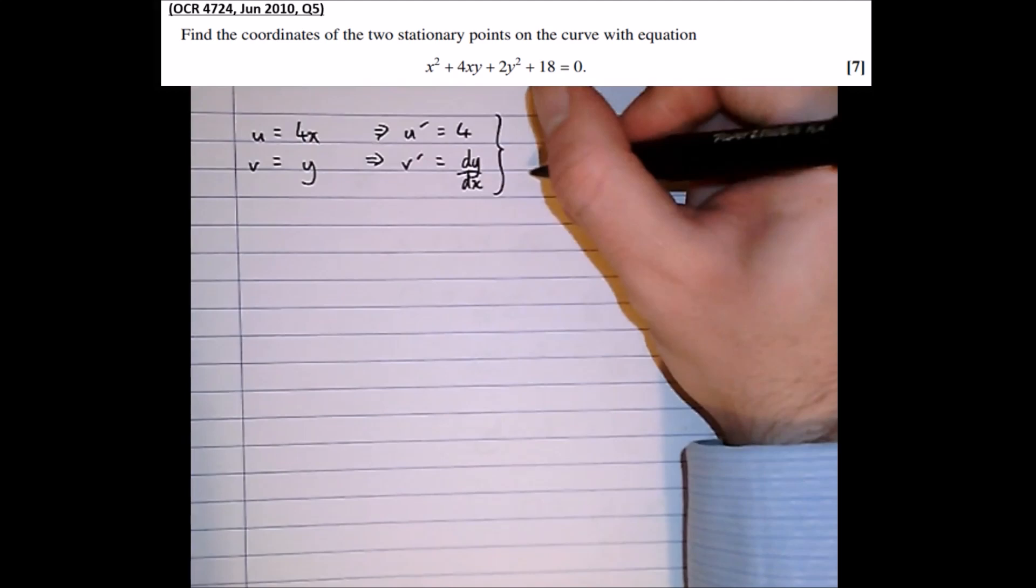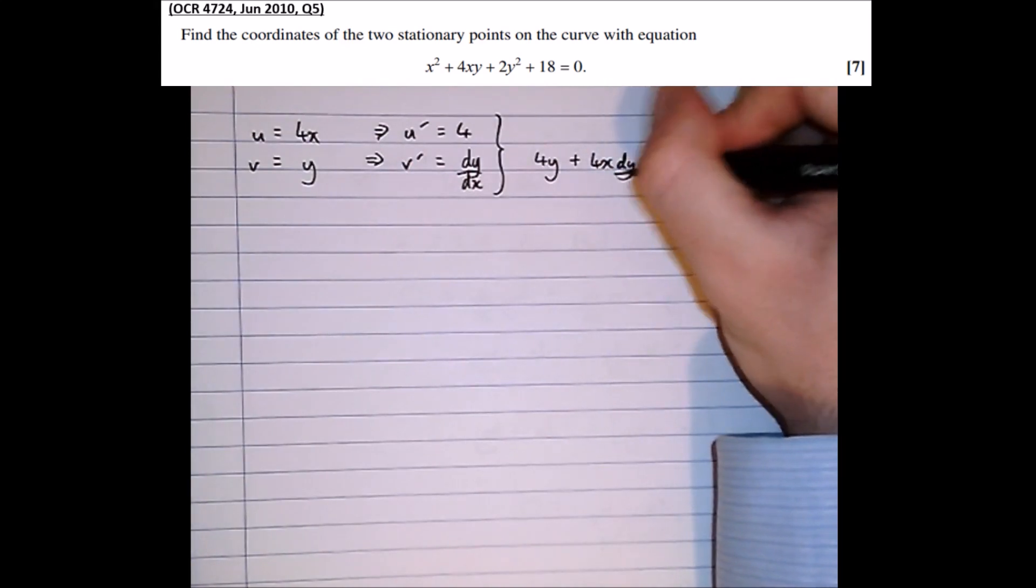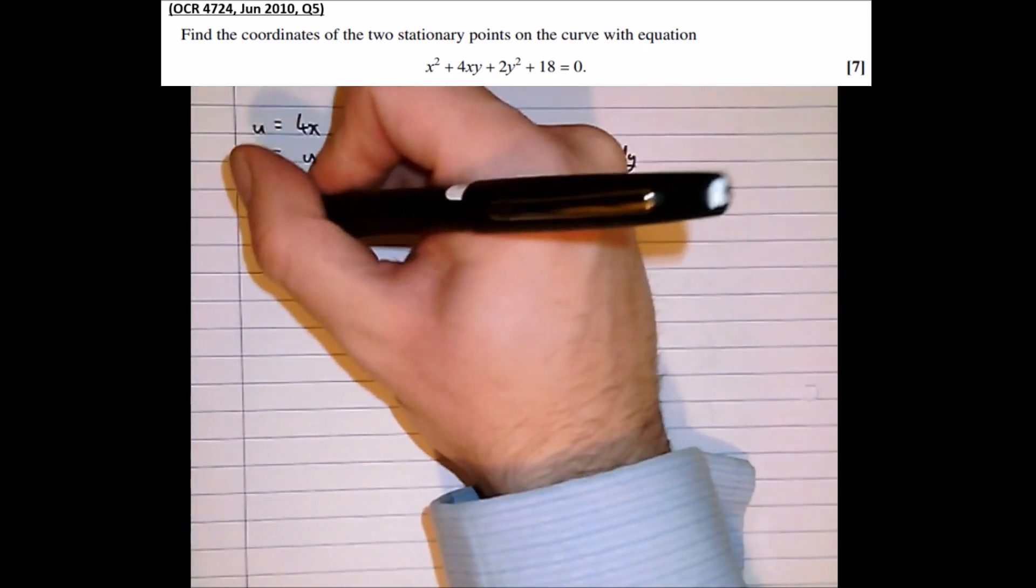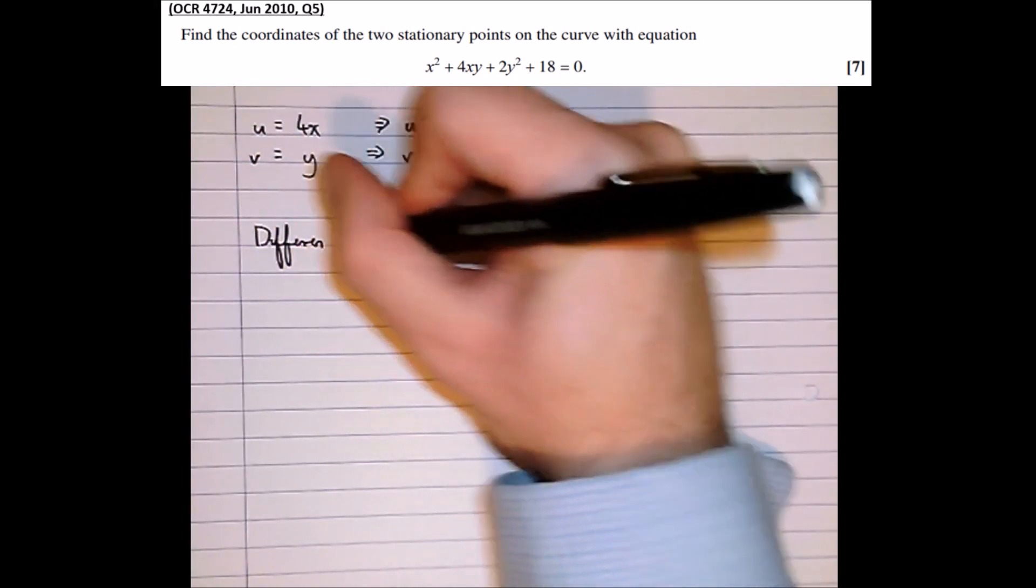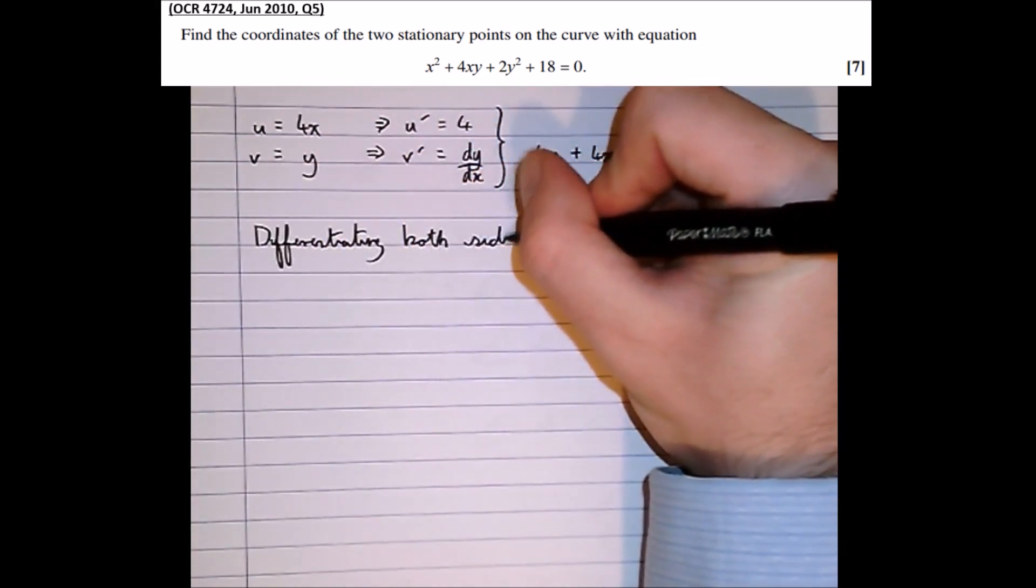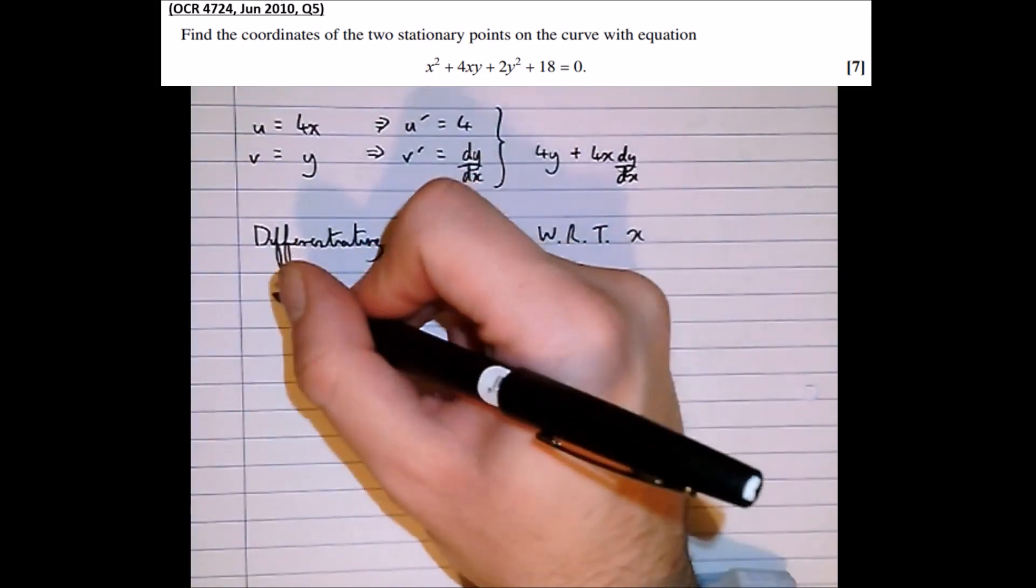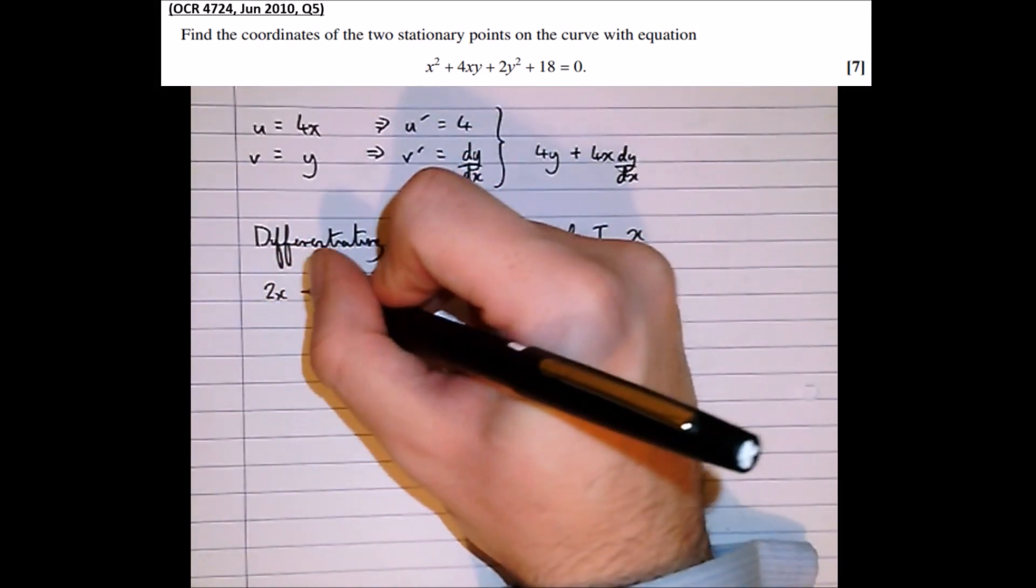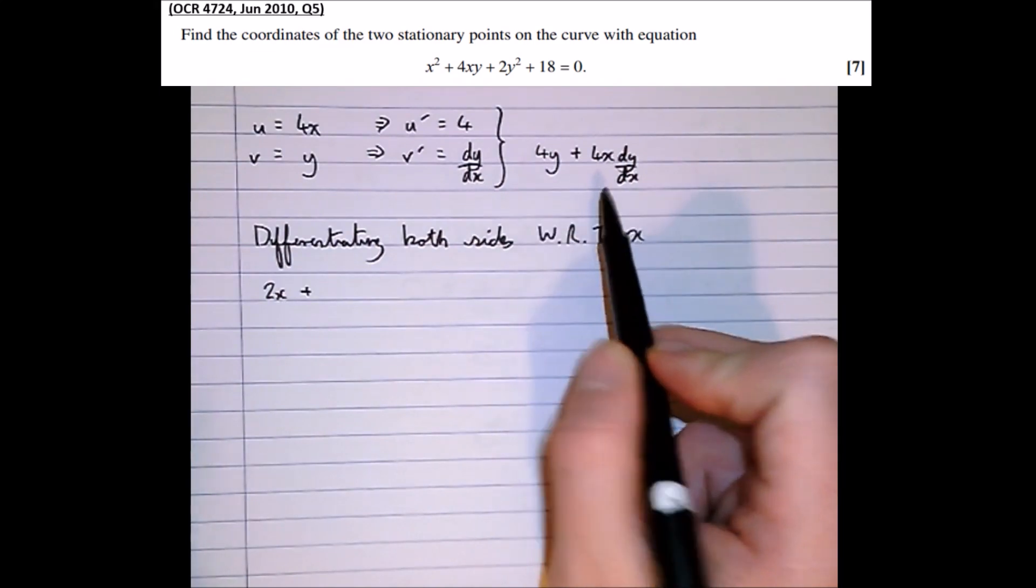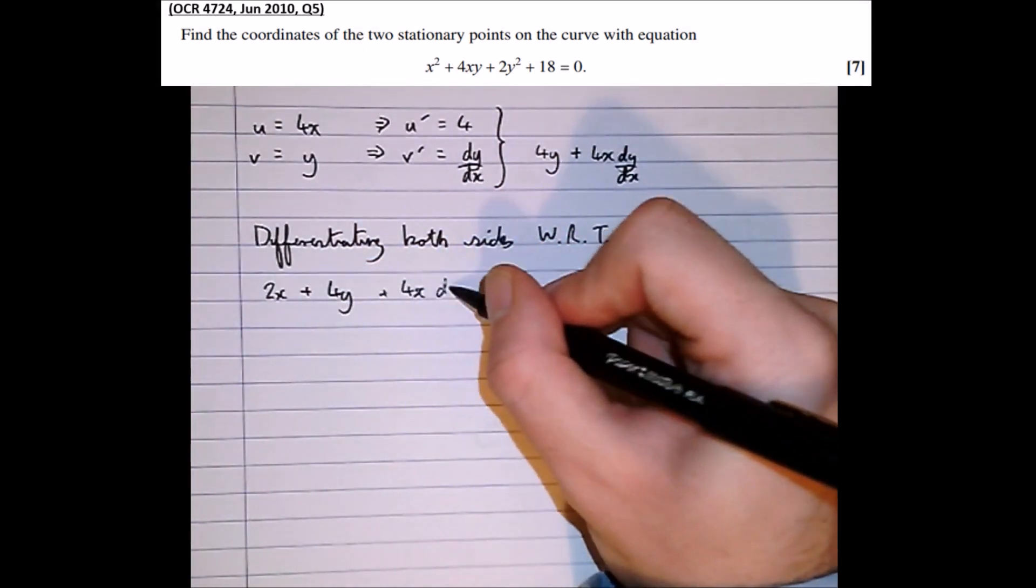Then applying the product rule: u v dash plus v u dash equals 4x dy by dx plus 4y is how 4xy differentiates. So now let's go for the whole expression differentiating both sides with respect to x. Well the first term x squared when we differentiate that with respect to x we get 2x plus, so the next bit is more complicated but because we've chosen to do all the products first we've actually done all the working for that up here.